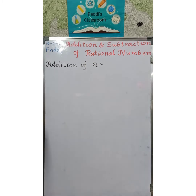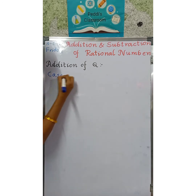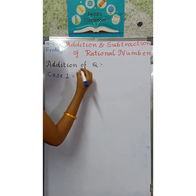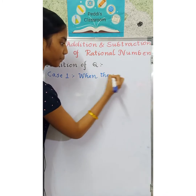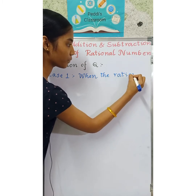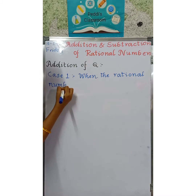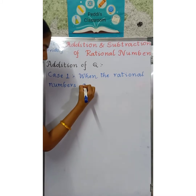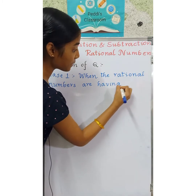First, we will discuss addition of rational numbers. Addition of rational numbers is mostly similar to addition of fractions, but in this we have two cases. First, we will discuss Case 1. Case 1 is when the rational numbers are having the same denominator.